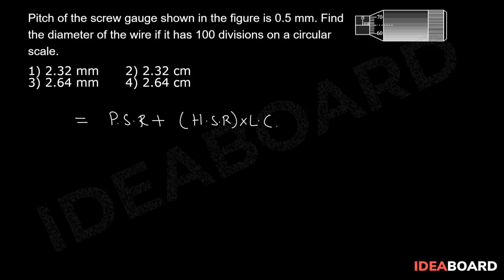From the diagram given in the question, it shows that pitch scale reading is equal to 4 divisions, where in the question it is mentioned one division is equal to 0.5 mm.